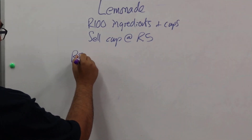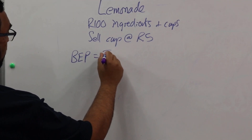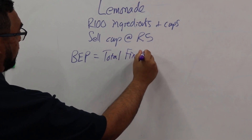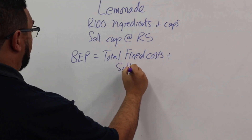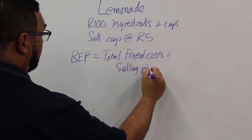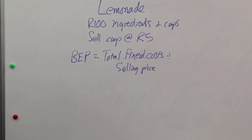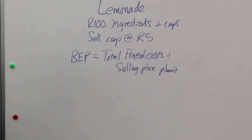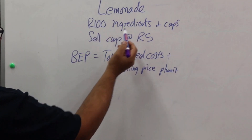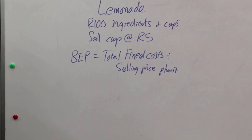The break-even point equals our total fixed costs divided by the selling price per unit. When we talk about fixed costs, we're talking about costs that we can't do without — like we have to buy ingredients, and we have to buy cups. Those are costs we're going to incur every single time. So what is the total of our fixed costs?